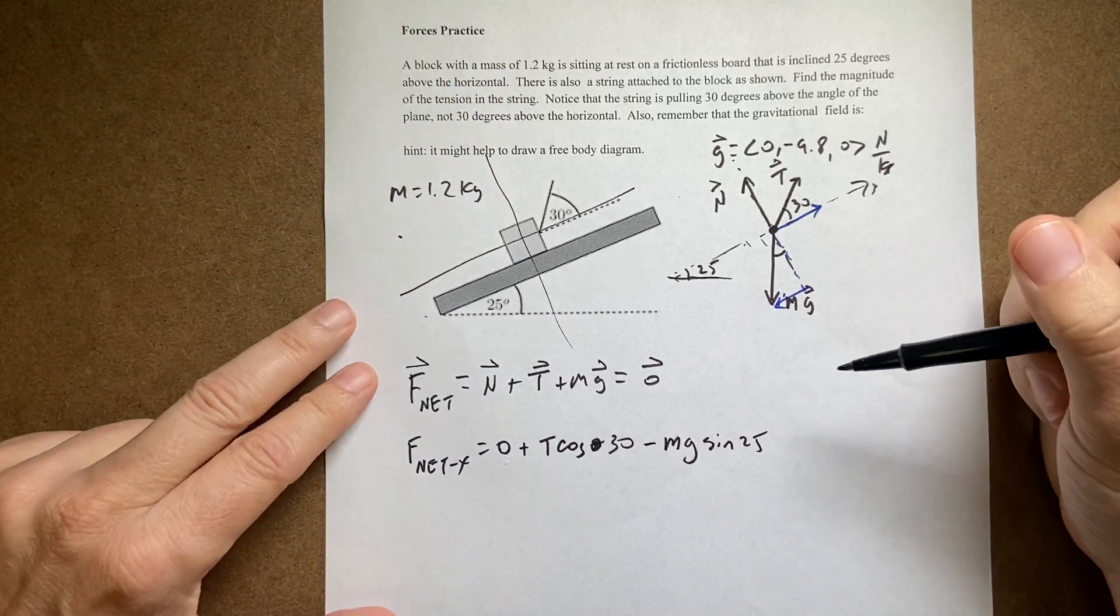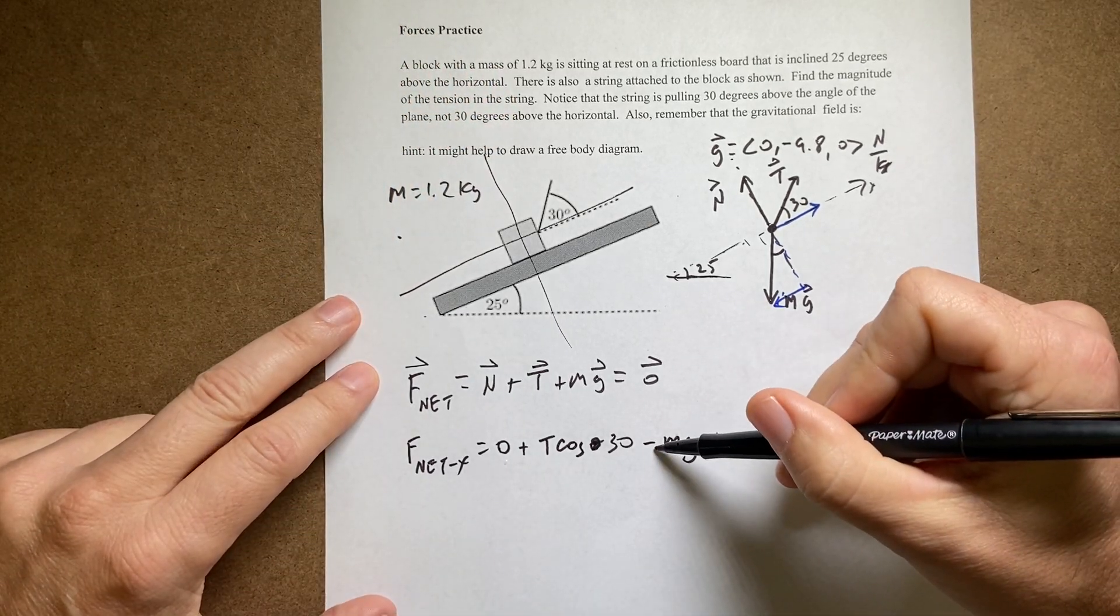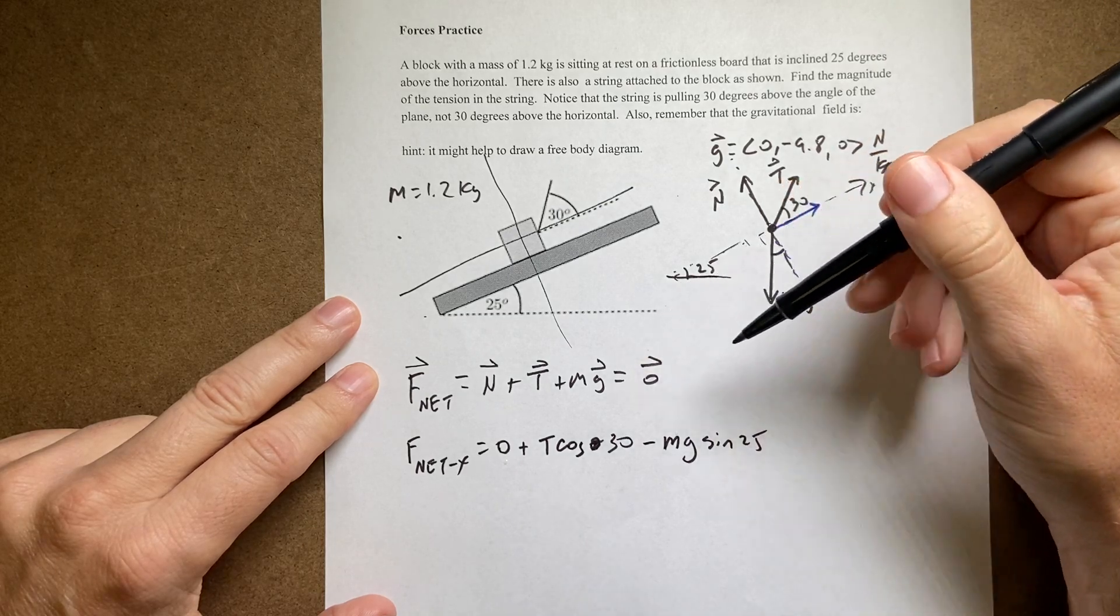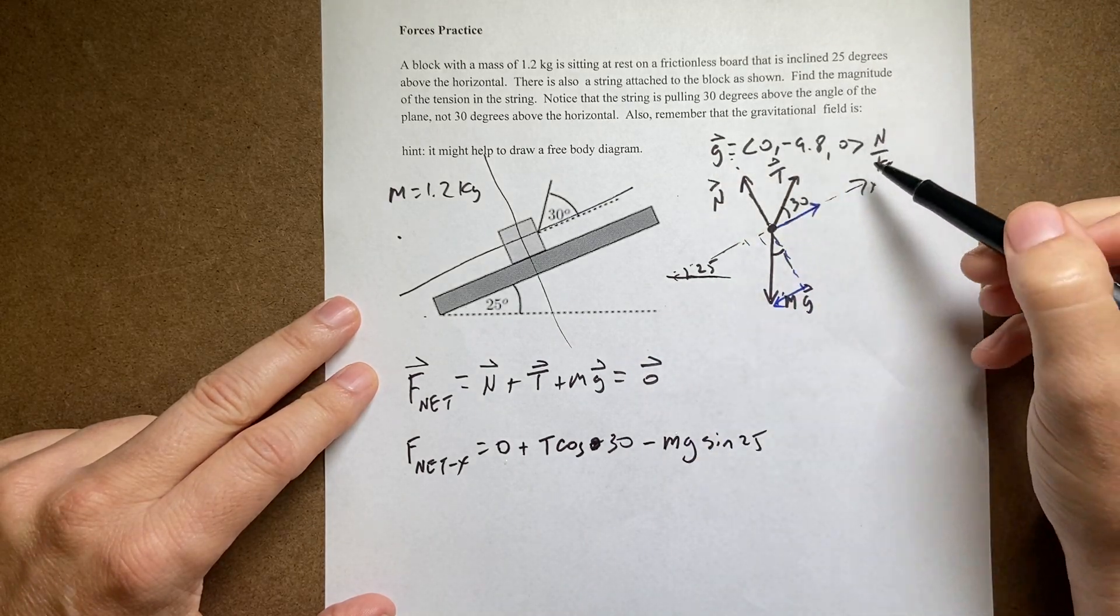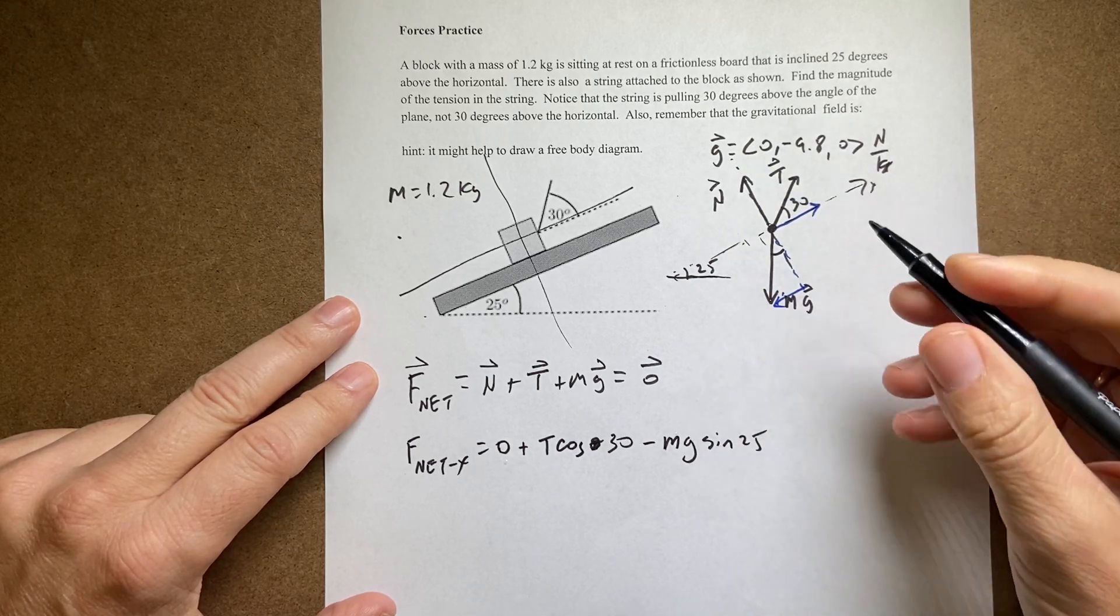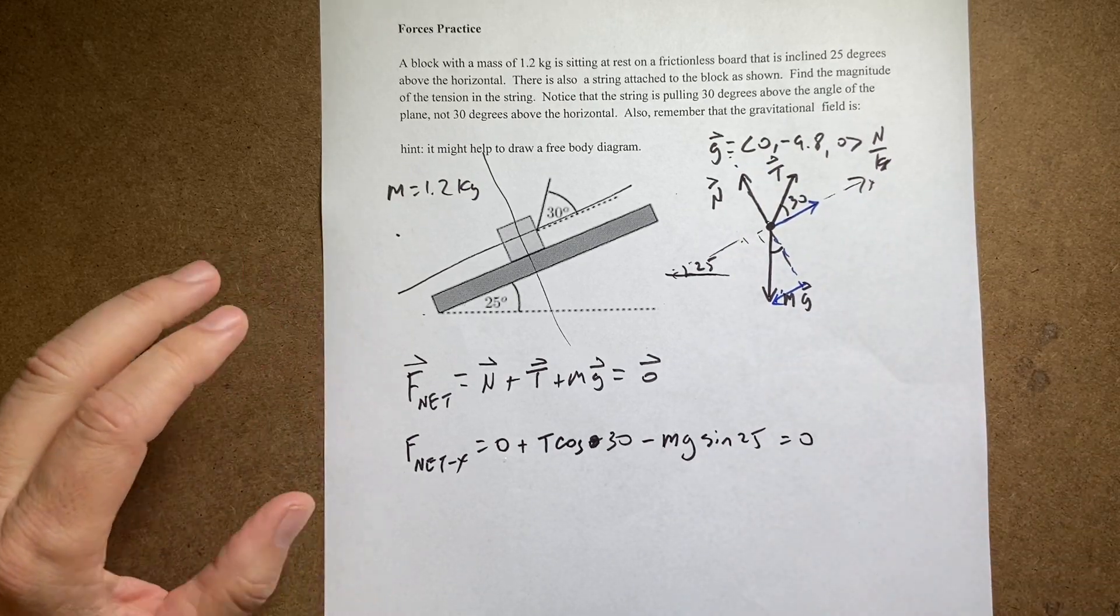Now a couple of important points. It's minus right here because it's in the negative x direction. G is 9.8. It's the magnitude of this gravitational field. So don't put the negative sign in there twice. And that has to be equal to zero.